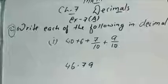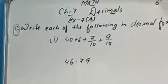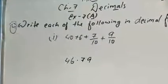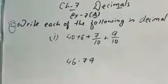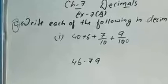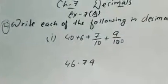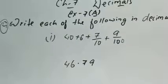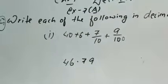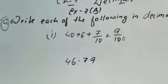Now students, question number 4 is write each of the following in decimal form. The question is 40 plus 6 plus 7 by 10 plus 9 by 100. So students, here you can see the whole part is 40 plus 6, which is 46.